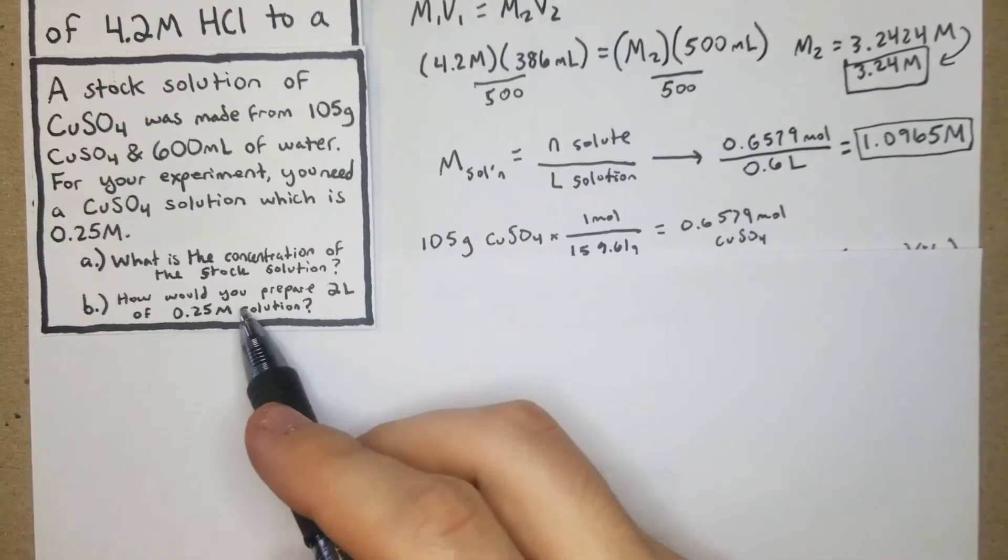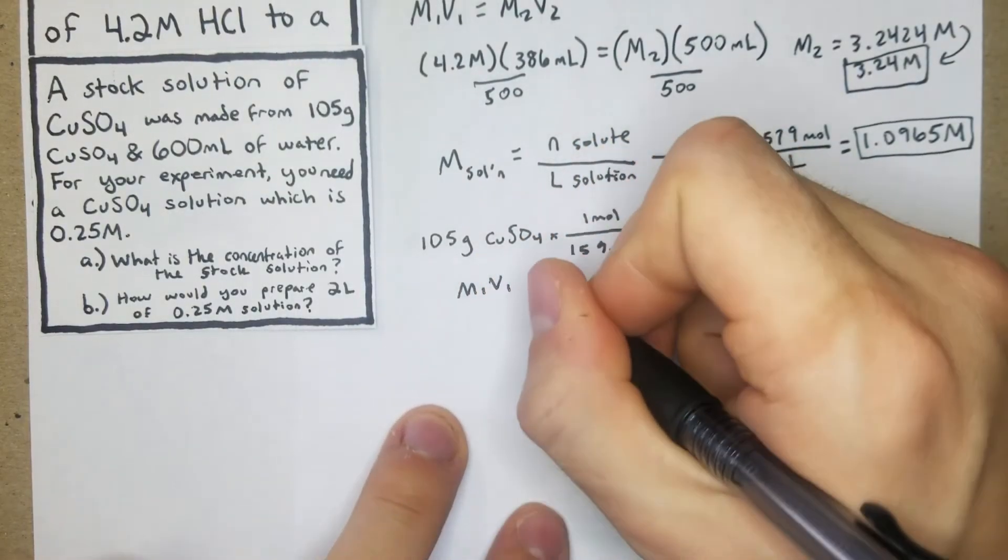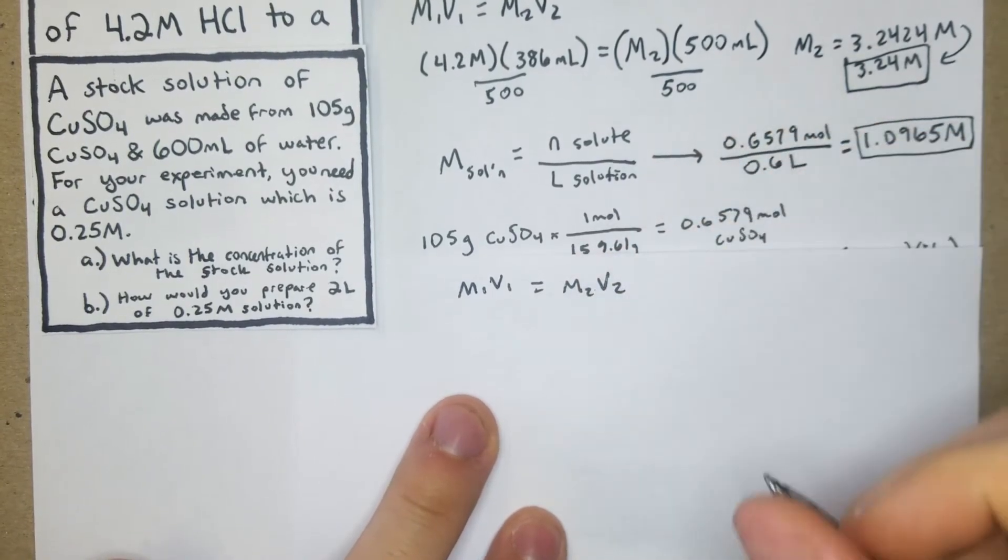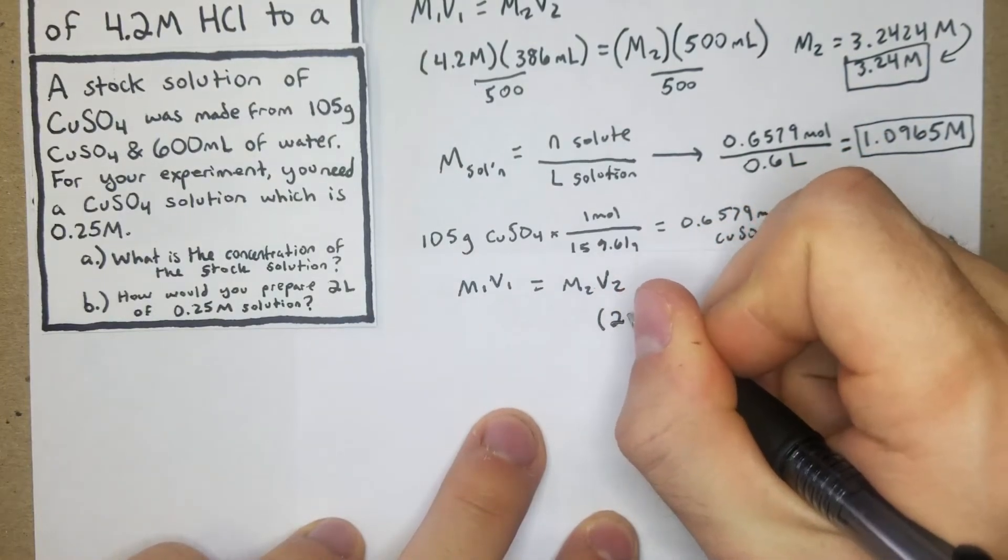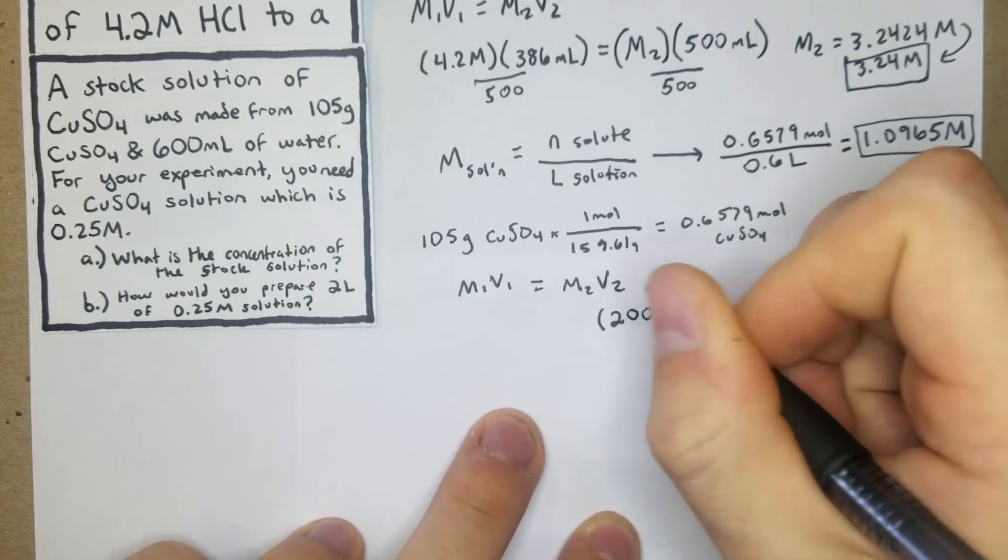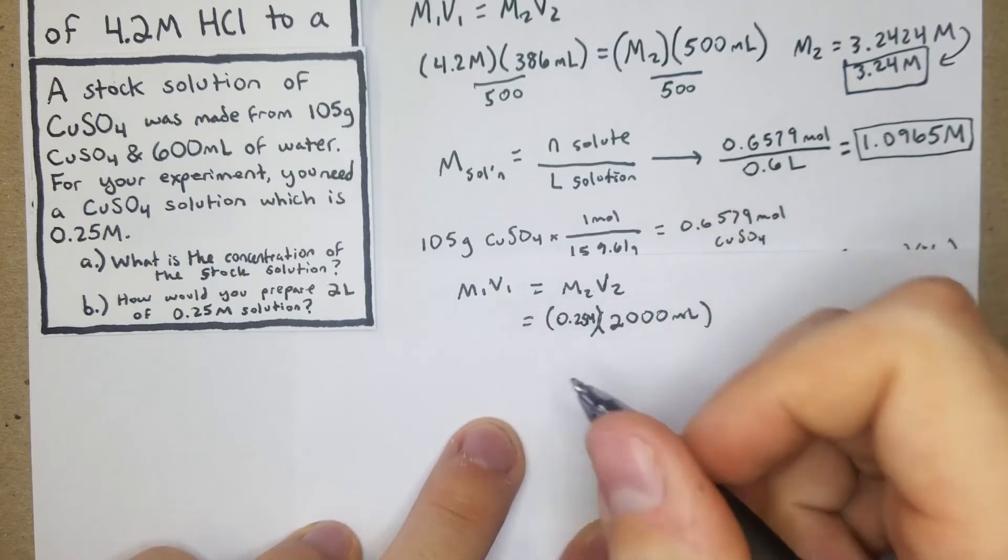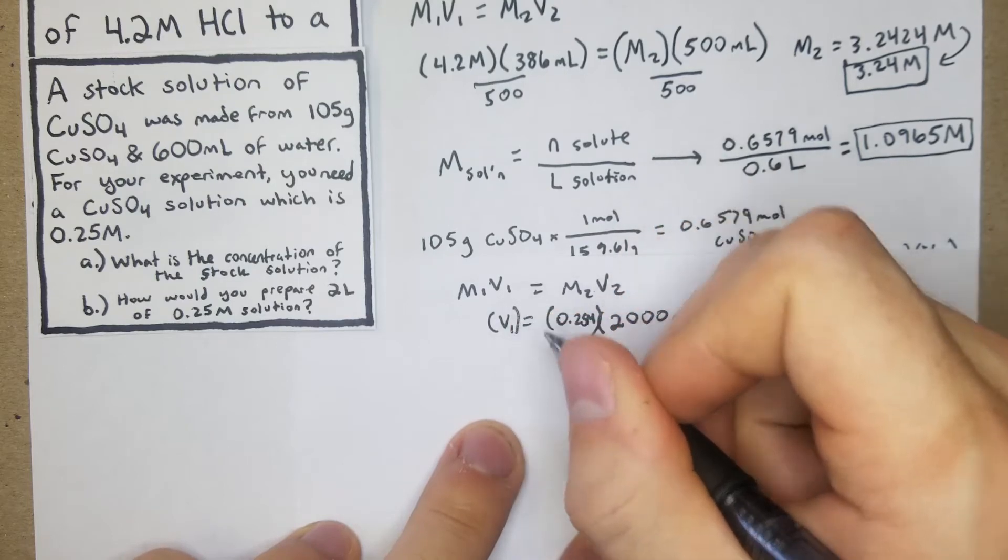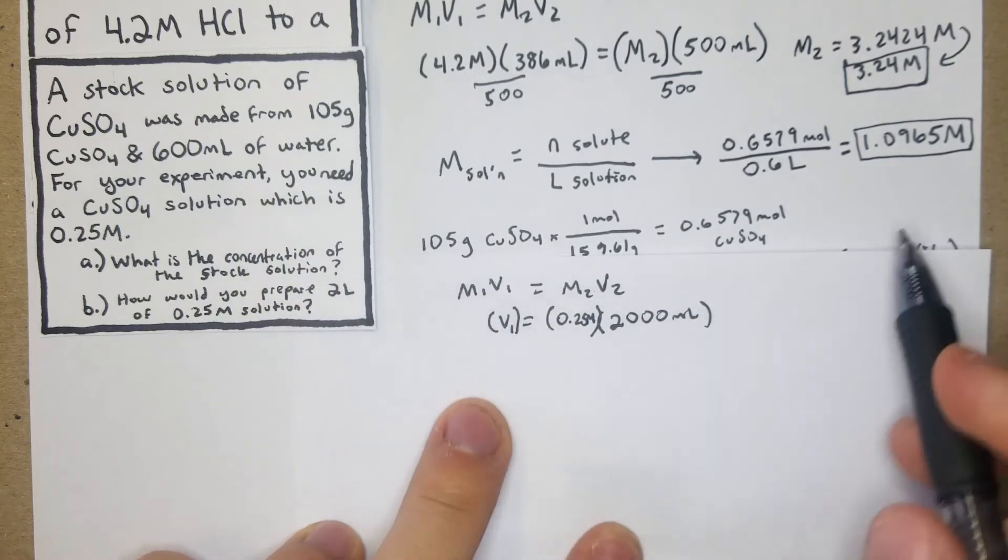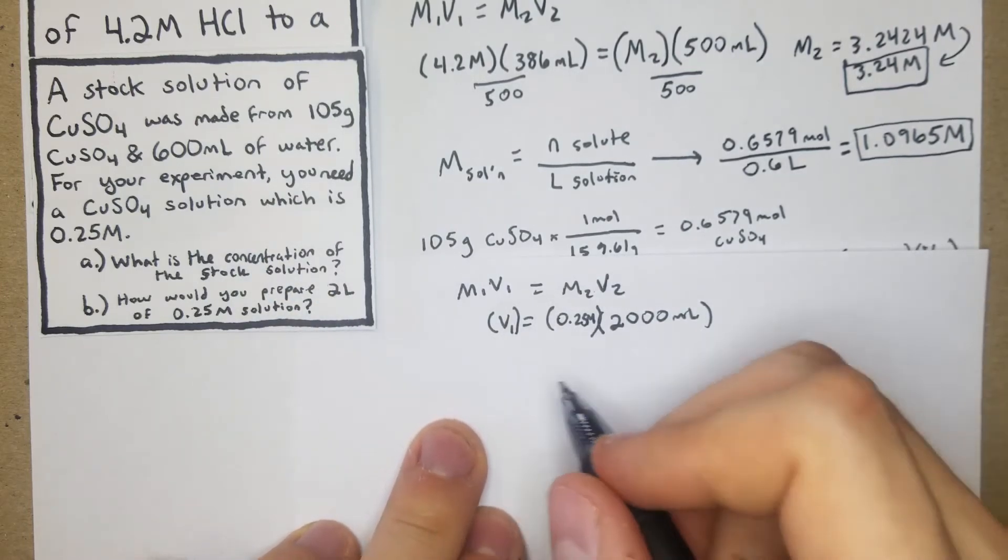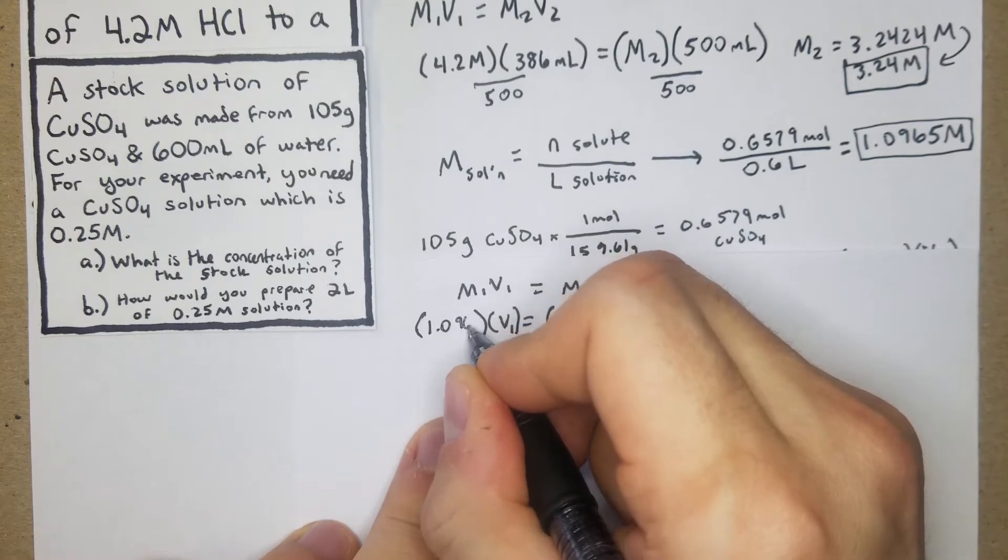For this next problem here, how would you prepare 2 liters of 0.25 molar solution? We're just going to again use that M1V1 equals M2V2. And this time we're going to use what the problem provides. So what we know is that we need 2 liters, but we can make it 2000 mL for this case. And then molarity, we need 0.25 M. And then that's going to equal our V1, which is our unknown here because we're trying to figure out how much of our stock solution, which we figured out the molarity of, we're going to use to make this. And then this is going to be our 1.0965 M.